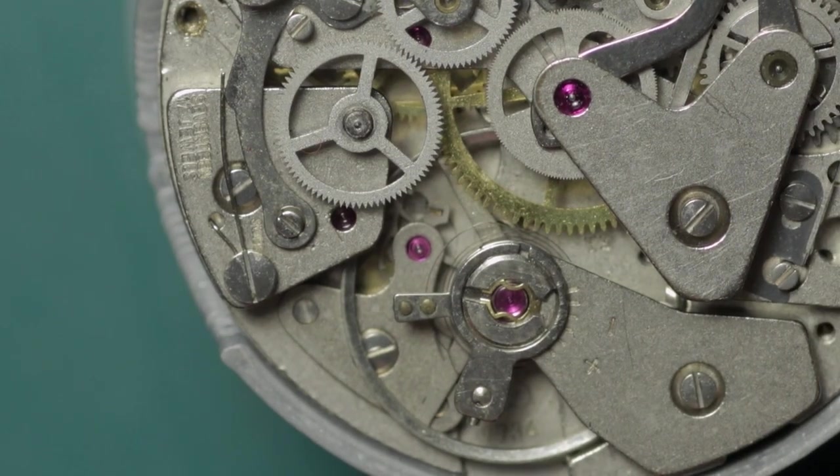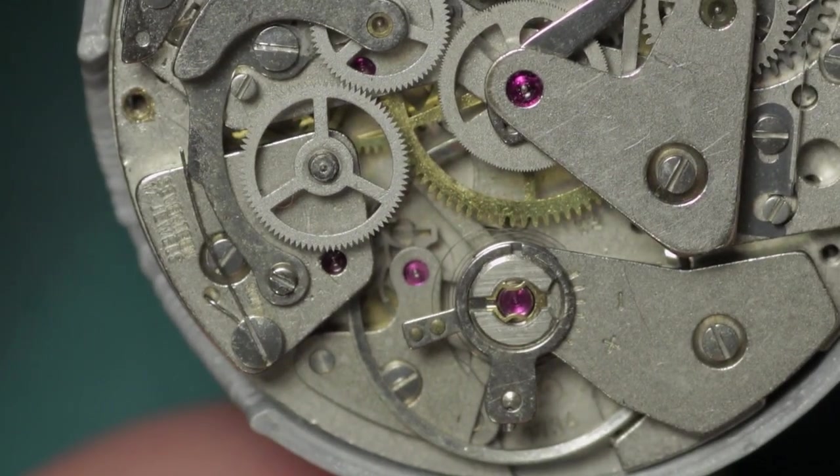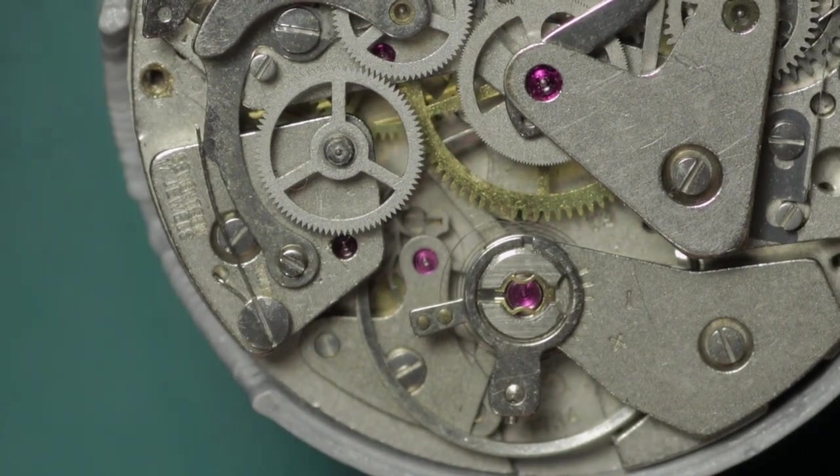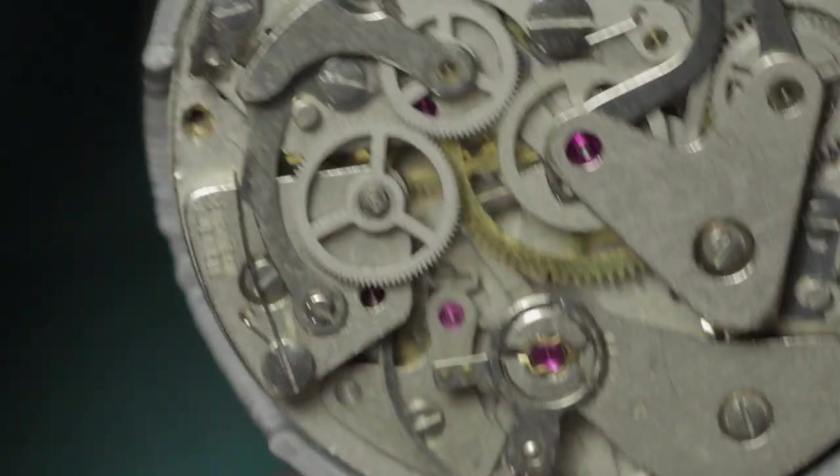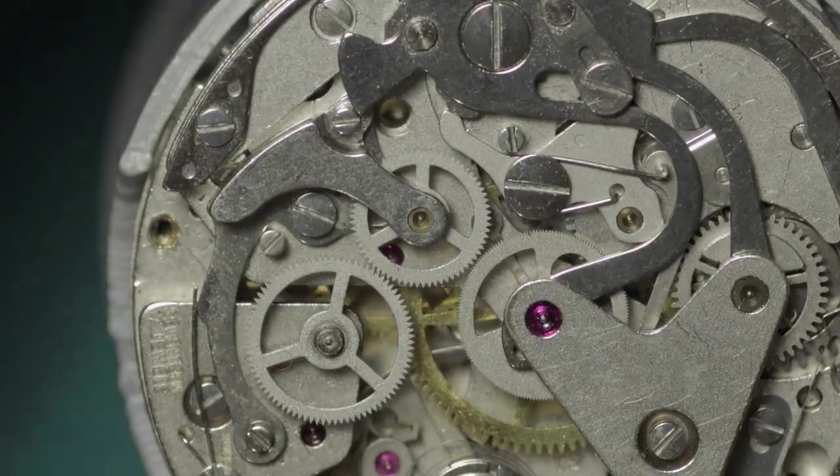That's how you release the power. The next thing I'm going to do is start the disassembly with the balance and the pallets. Then I shall flip over, remove the dial side components, and then we'll go back to the movement side. From this point on I shall switch to the voice-over.